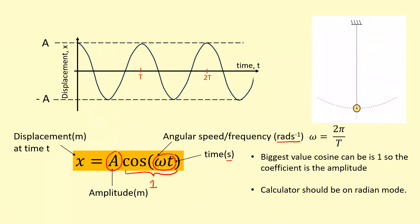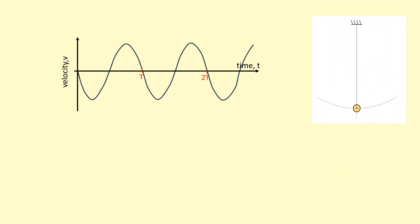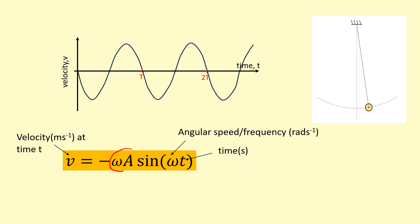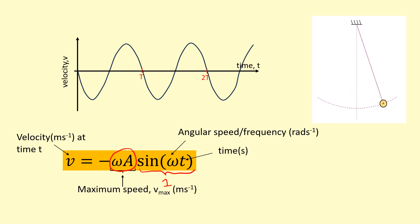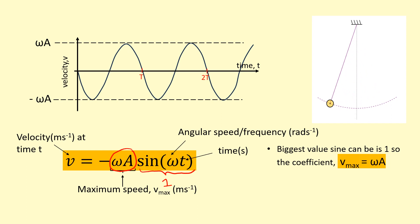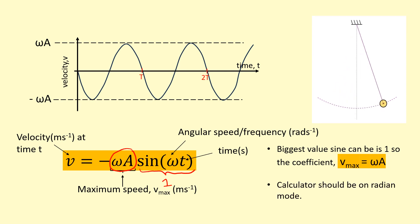There's also an equation for velocity. It looks similar to the displacement equation, except now you have sine instead of cosine — that's because you differentiate to find the gradient. When you differentiate, an extra ω comes out the front, so the coefficient is ωA. The largest value sine can take is one, so ωA is the maximum speed, v_max. Remember to set your calculator to radian mode when using this equation.